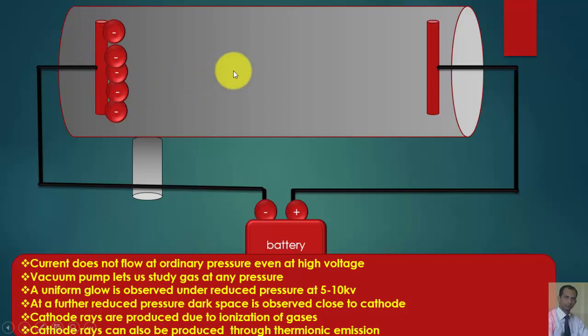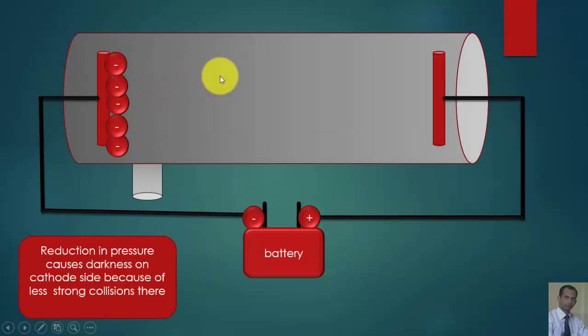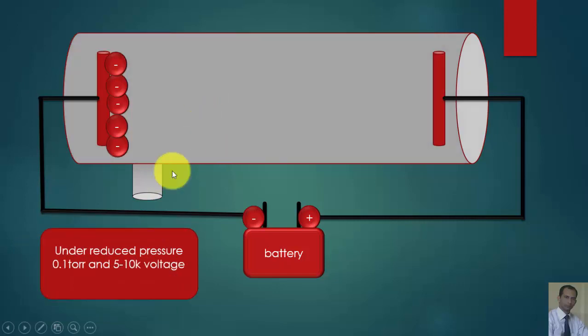But in this particular case we will discuss about the production of cathode rays through ionization of the gas. Reduction in pressure causes darkness on cathode side because of the less strong collisions there. This phenomenon under reduced pressure is at 0.1 torr at 5 to 10 kV voltage.